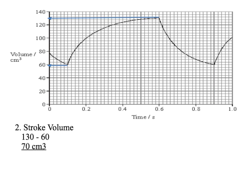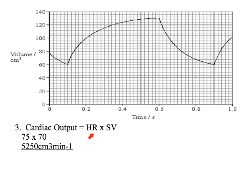Now we need to work out the stroke volume, which we can also find from the graph. The stroke volume is the volume of blood pumped out per beat of the ventricle. We need the difference between the minimum and maximum volume of blood in the ventricle: 130 minus 60 gives 70 centimetres cubed. So the cardiac output is 75 times 70, which is 5,250 centimetres cubed per minute.